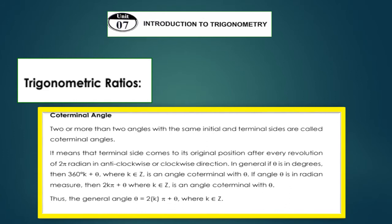In general, if theta is in degrees, then 360k + theta, where k belongs to Z (integers), is an angle co-terminal with theta. If angle theta is in radian measure, then 2kπ + theta, where k belongs to Z, is an angle co-terminal with theta. Thus the general angle theta = 2kπ + theta, where k belongs to Z.